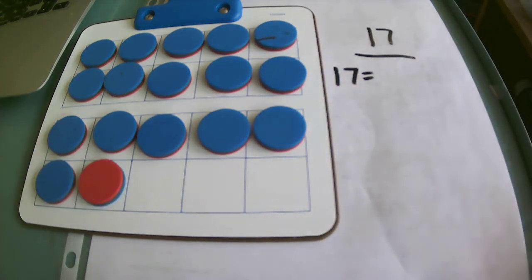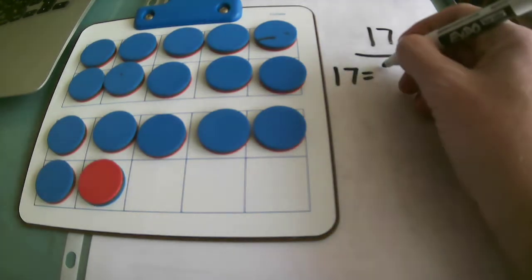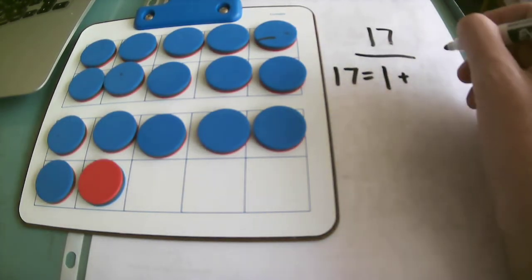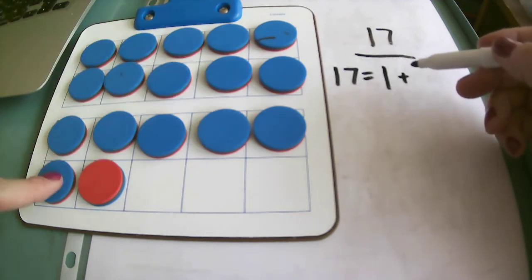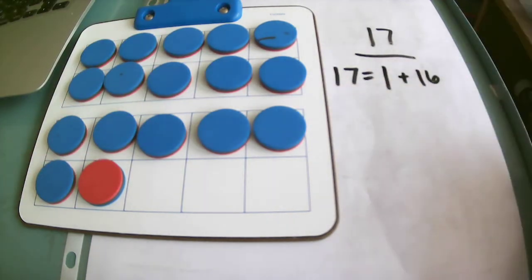If I flip one of these over, I haven't taken any counters away, I just flipped it over and changed the color. So I know that 1 and 16 are blue. So 1 and 16 gives me 17.